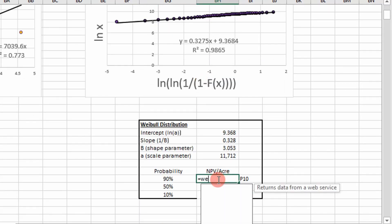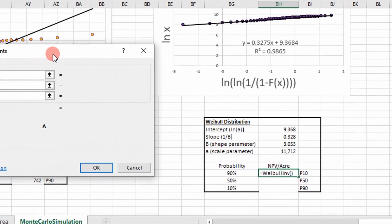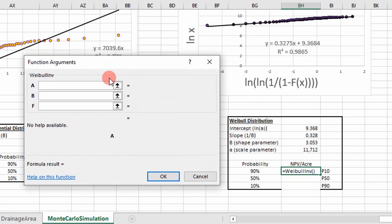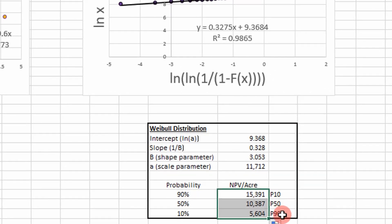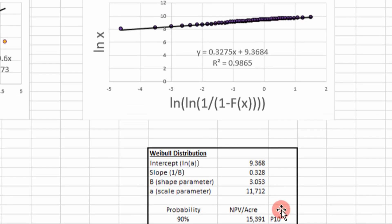I wrote a VBA function called Weibull inverse that takes three parameters: our scale parameter and you're going to freeze that, our shape parameter freeze that, and our cumulative probability value. So we determined our p10, p50, and p90 using a Weibull distribution.